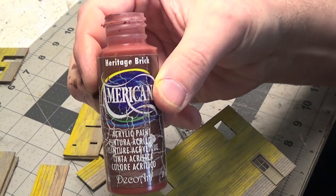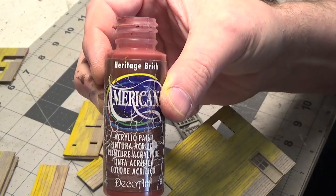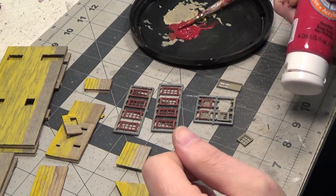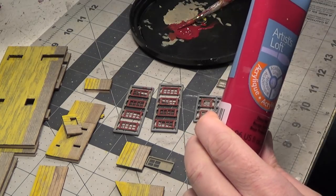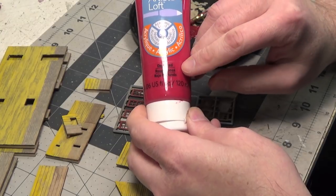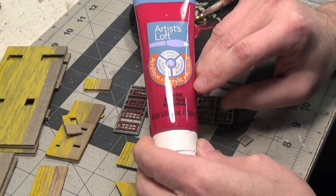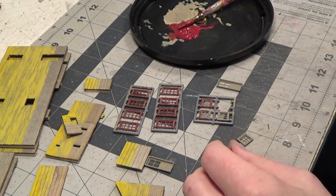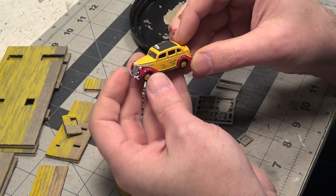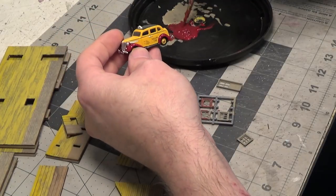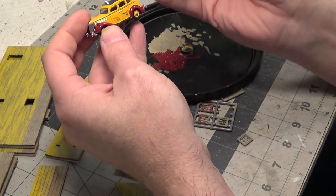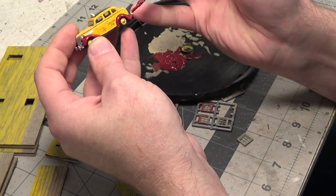The Heritage Brick was a little too brown. So I ended up adding a little bit of deep red to it. Just because I wanted to match the red on the car a little bit more. So as you can see, I think it's a little bit better match.